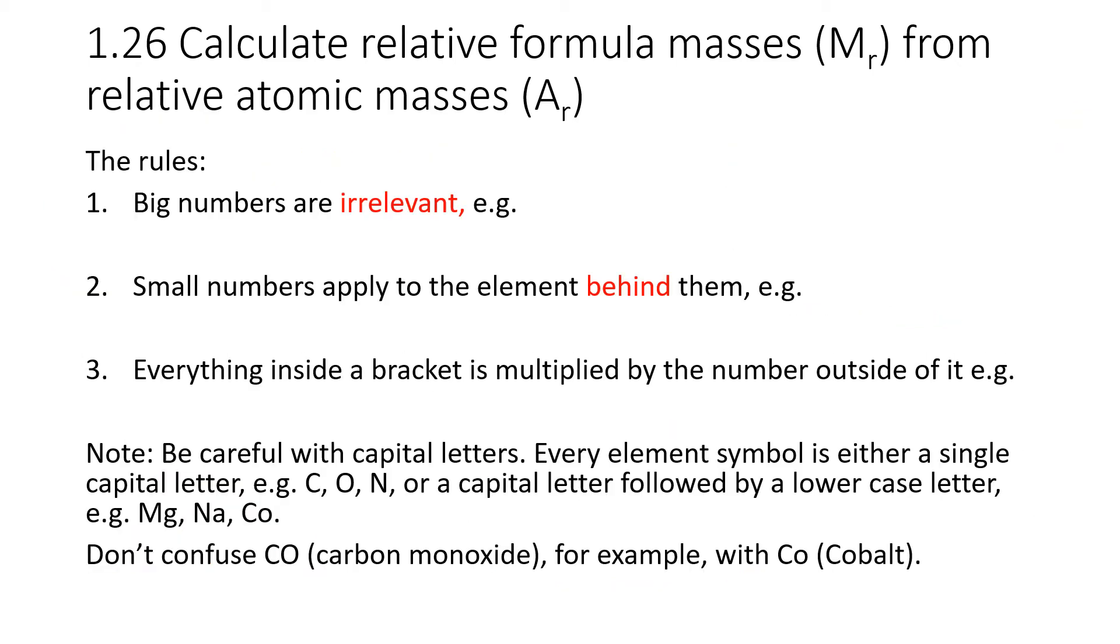Now, before we go into more examples, I'm running through a few rules to make sure you don't get confused when you do this. The first thing, the big numbers are irrelevant, like you'd have just seen when we did the balancing equations. They're irrelevant to relative formula masses. Secondly, the small numbers, for example in H2O, we had the small number 2, applies only to the element just behind them. So H2 there means you have two hydrogens. It doesn't affect the oxygen, and it wouldn't affect anything else that was to the left of H. It only affects the one that is just before it.